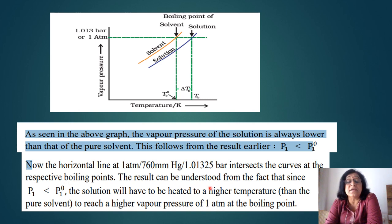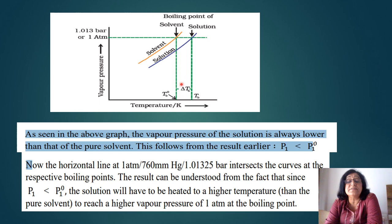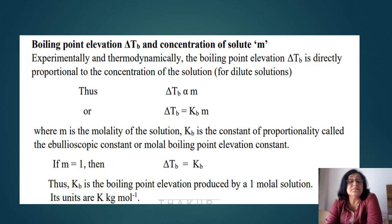The horizontal line at one atmospheric pressure intersects the curves at the respective boiling points. This result can be understood by the fact that since P1 is less than P10, the solution needs to be heated to a higher temperature to reach a vapor pressure of one atmosphere — the boiling point. The graph is clear.